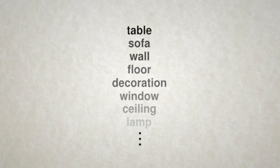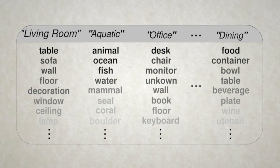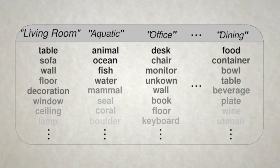For example, the category on the far left consists of scenes that are likely to include a table, a sofa, a wall, a floor, decoration, and a window. Thus, this category is intuitively interpreted as a living room scene. Inspection of the other scene categories indicates that they too correspond to real scenes that we would find in daily life.